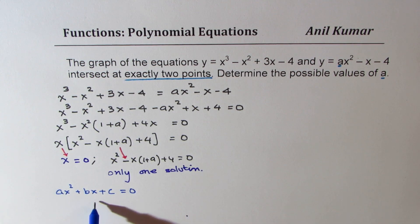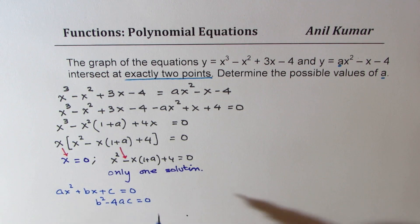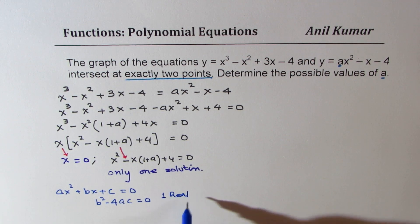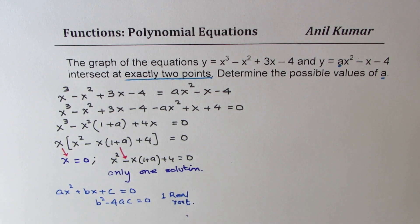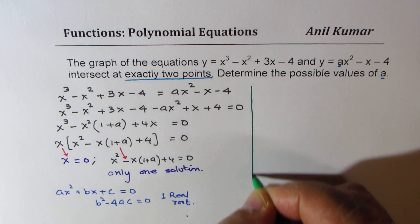Well, I hope you remember if you have equations like ax squared plus bx plus c equals 0, that means you should have b squared minus 4ac equals 0 for one real root. Is that clear to you?